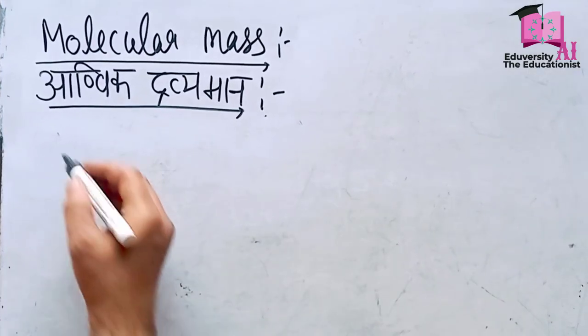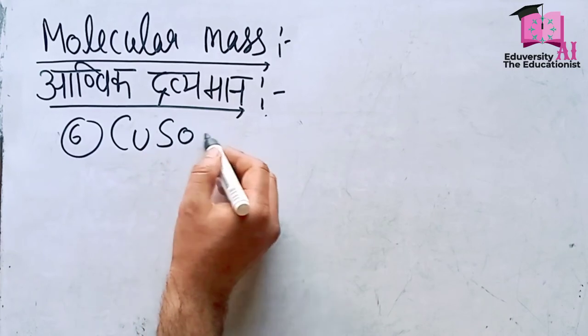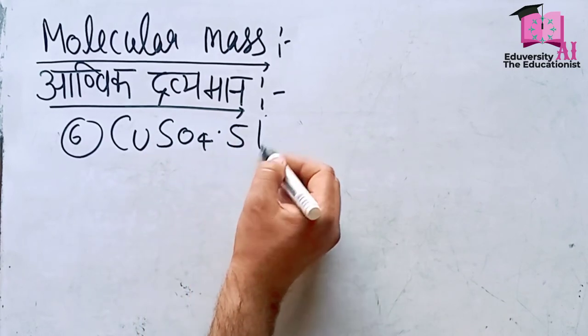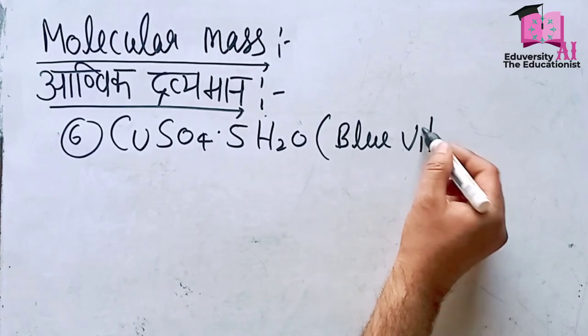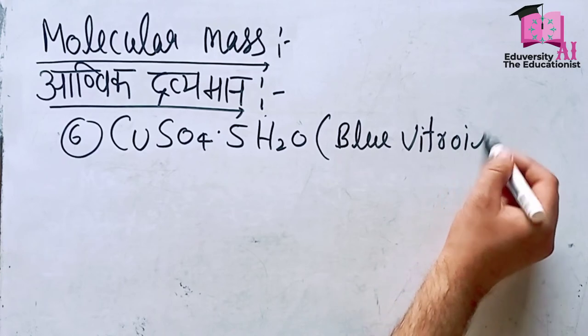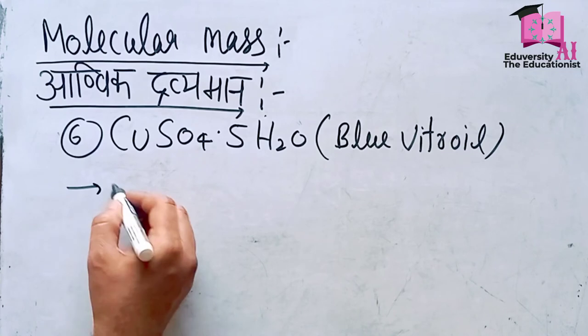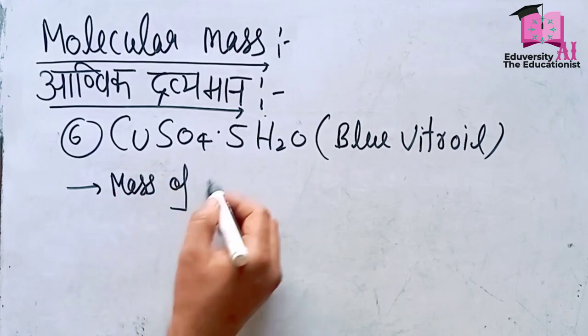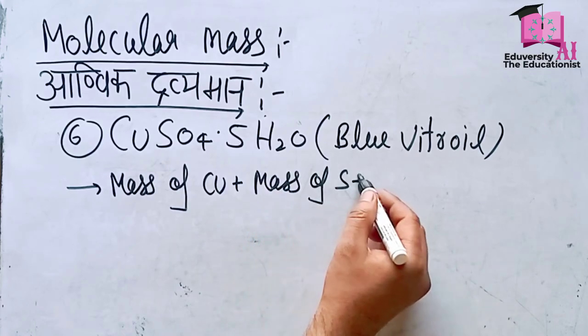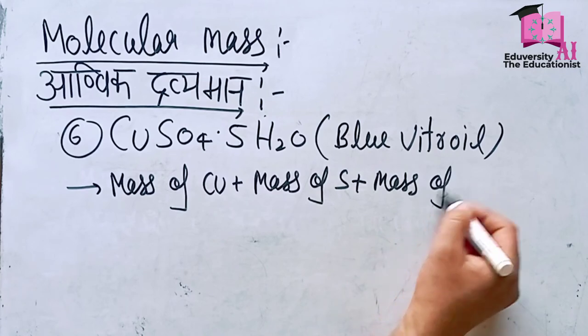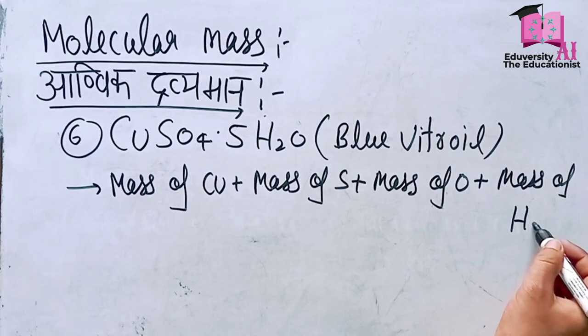Last example, number 6: CuSO₄·5H₂O, copper sulfate pentahydrate, blue vitriol. The formula is: mass of copper plus mass of sulfur plus mass of oxygen plus mass of water.